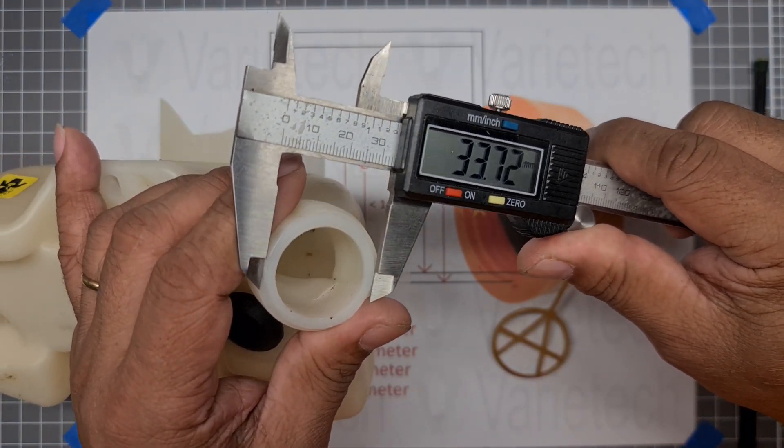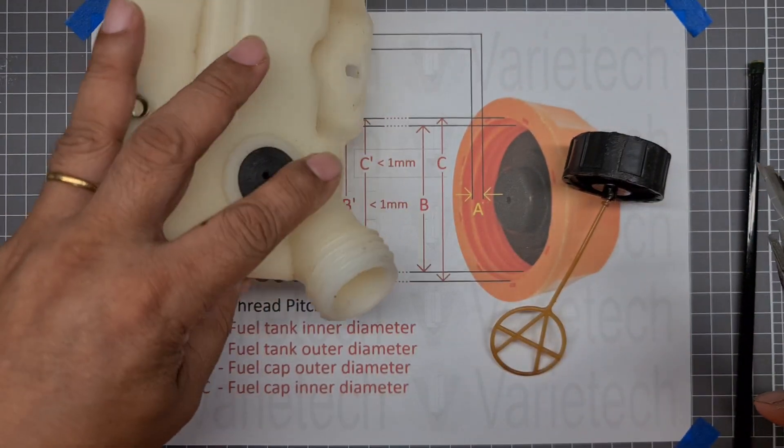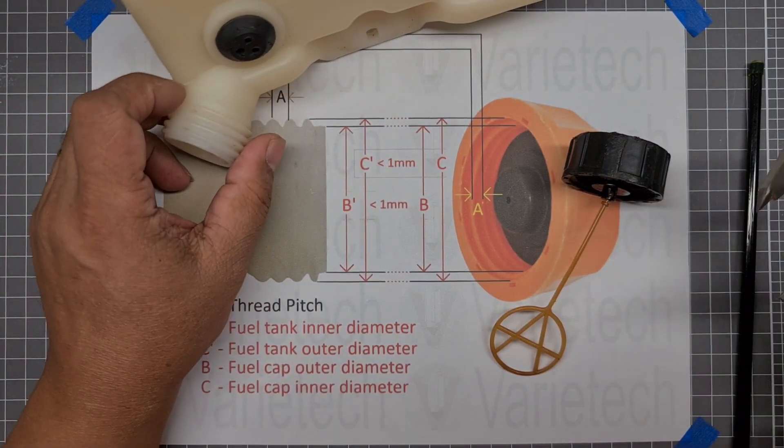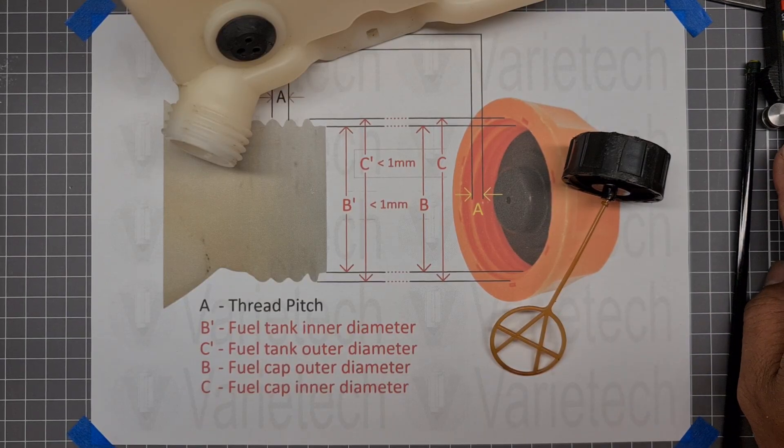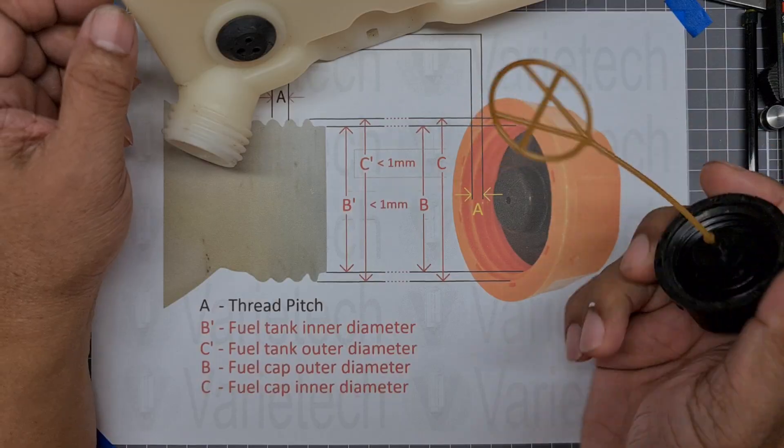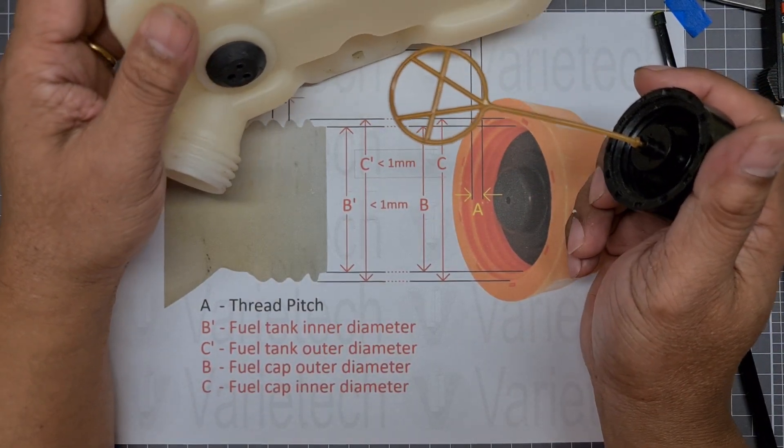So we have 33.7. So that's how we measure the fuel cap and the fuel tank. So if you have any question regarding the fuel cap, if it fits on your unit, please send me a message on eBay or our variety store.